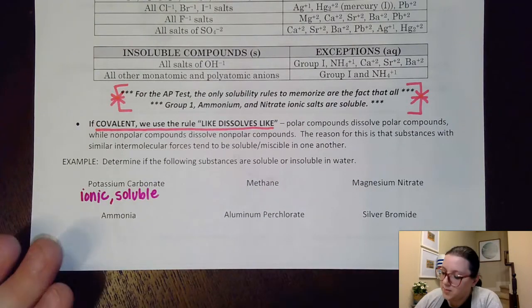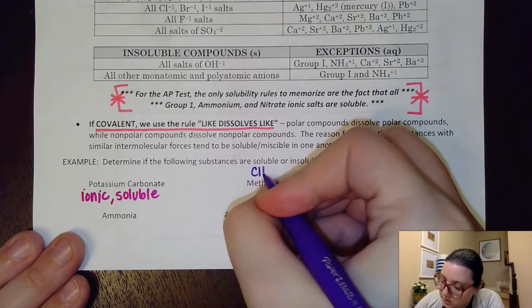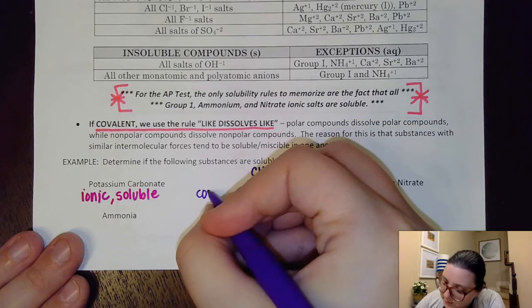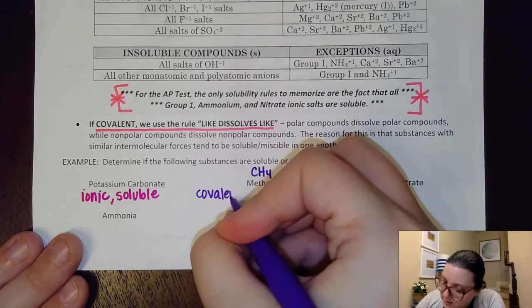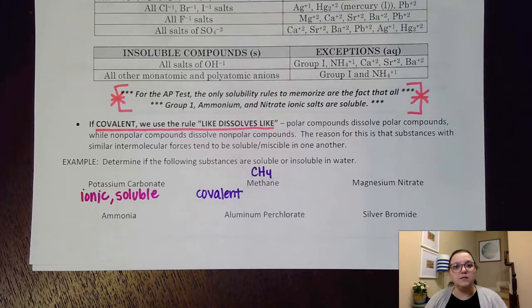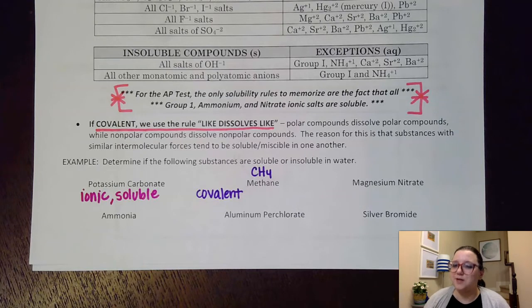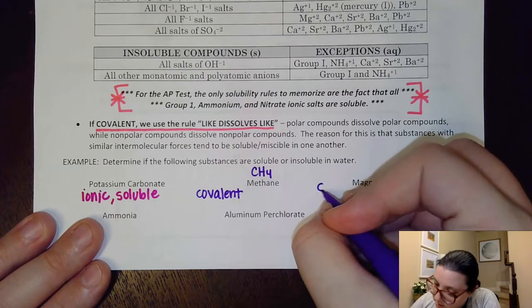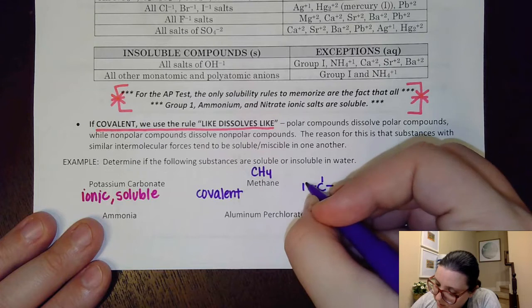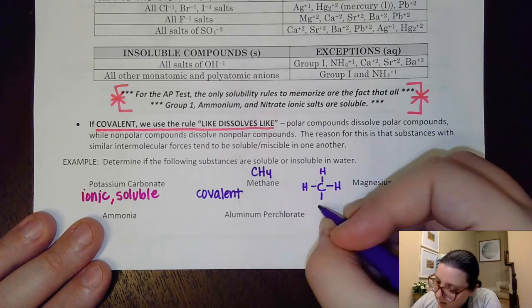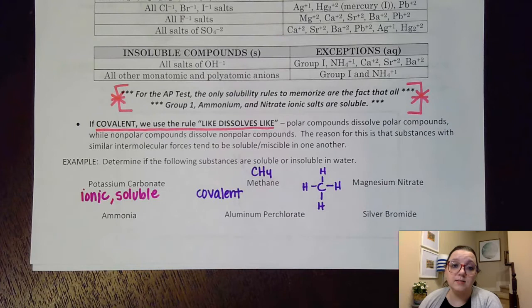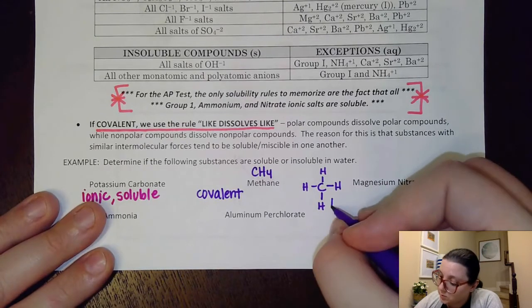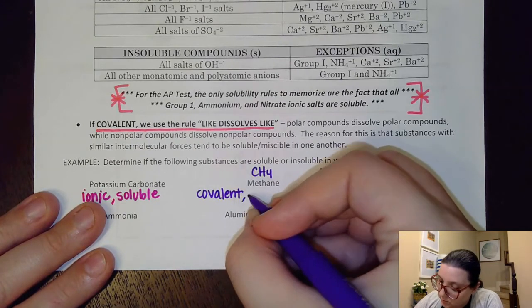Methane has the formula CH₄, so it is covalent. Once I see it's covalent, I ask: is it polar or nonpolar? Since it's all carbons and hydrogens, we can reason this out — or draw a quick structure. Methane is indeed nonpolar, so being nonpolar it would be insoluble in water.